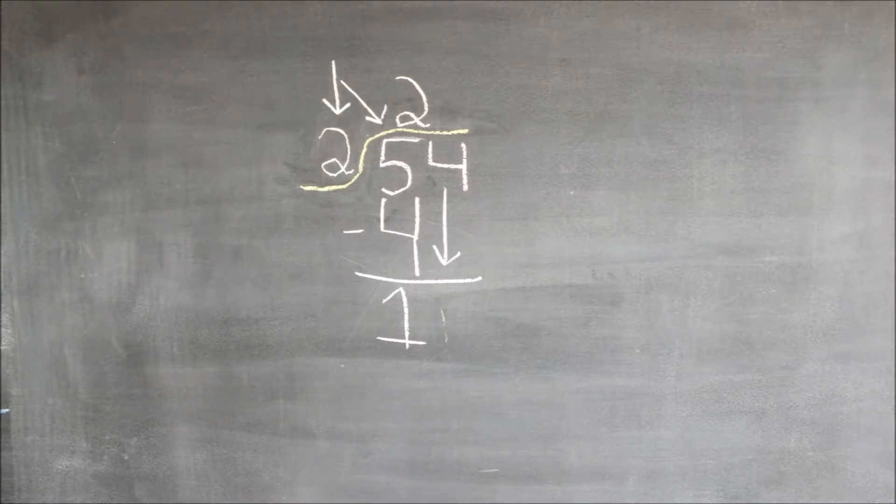Our next step is bringing down the four from the 54, and then we get 14. We do the same steps as we did with the 54, but we do it with the 14 instead.